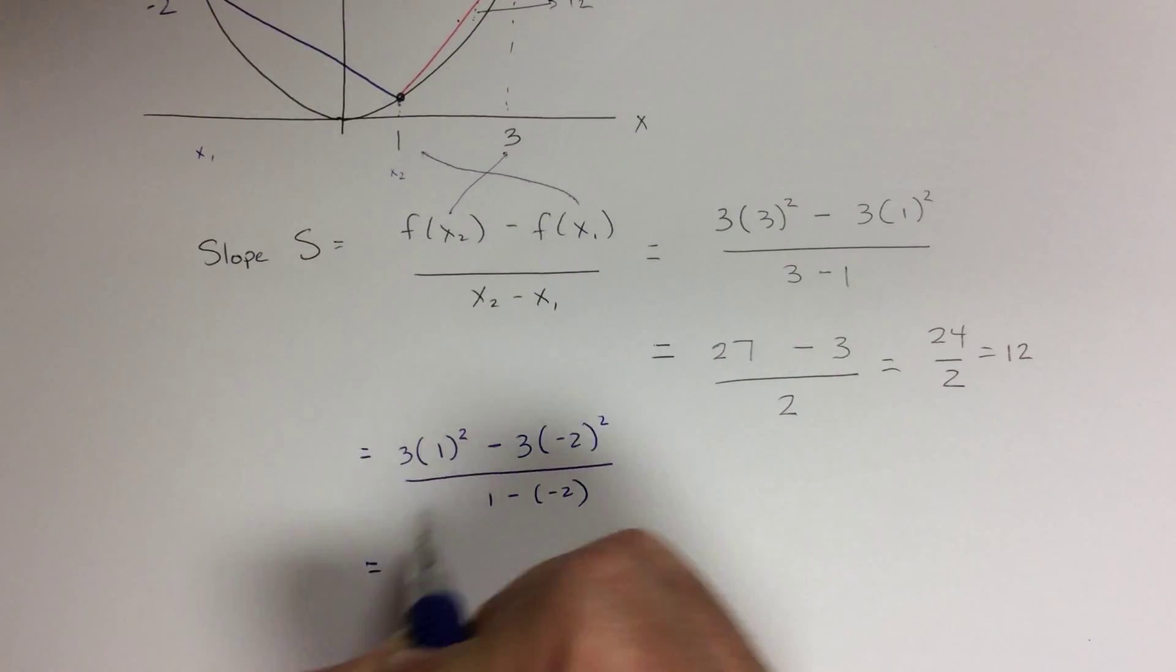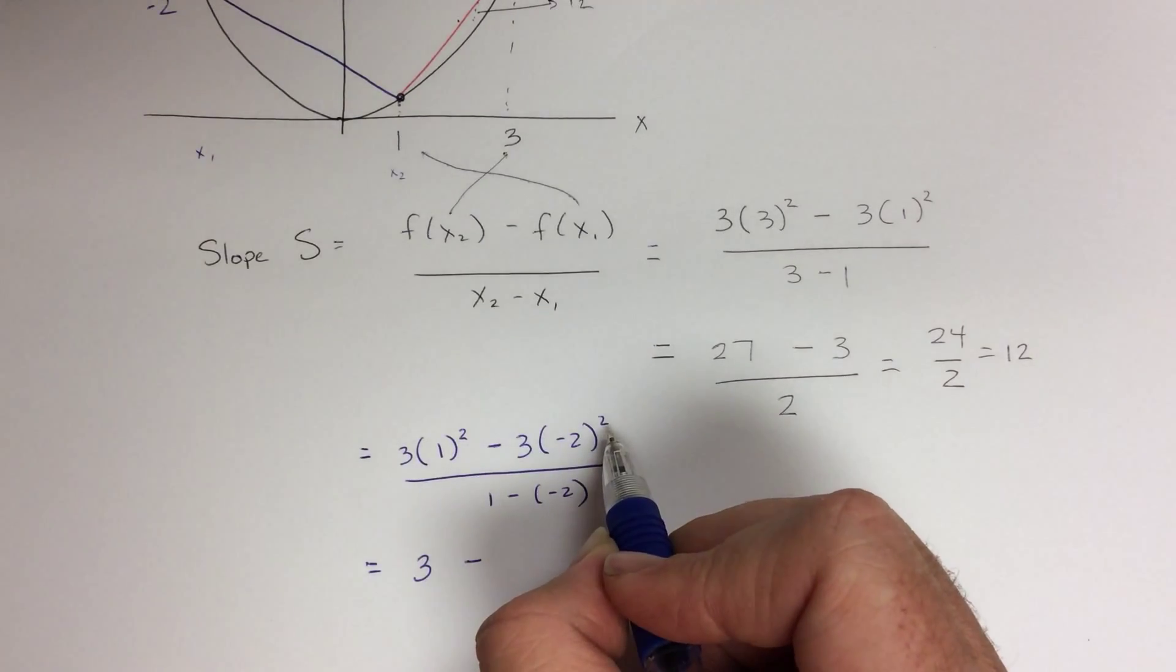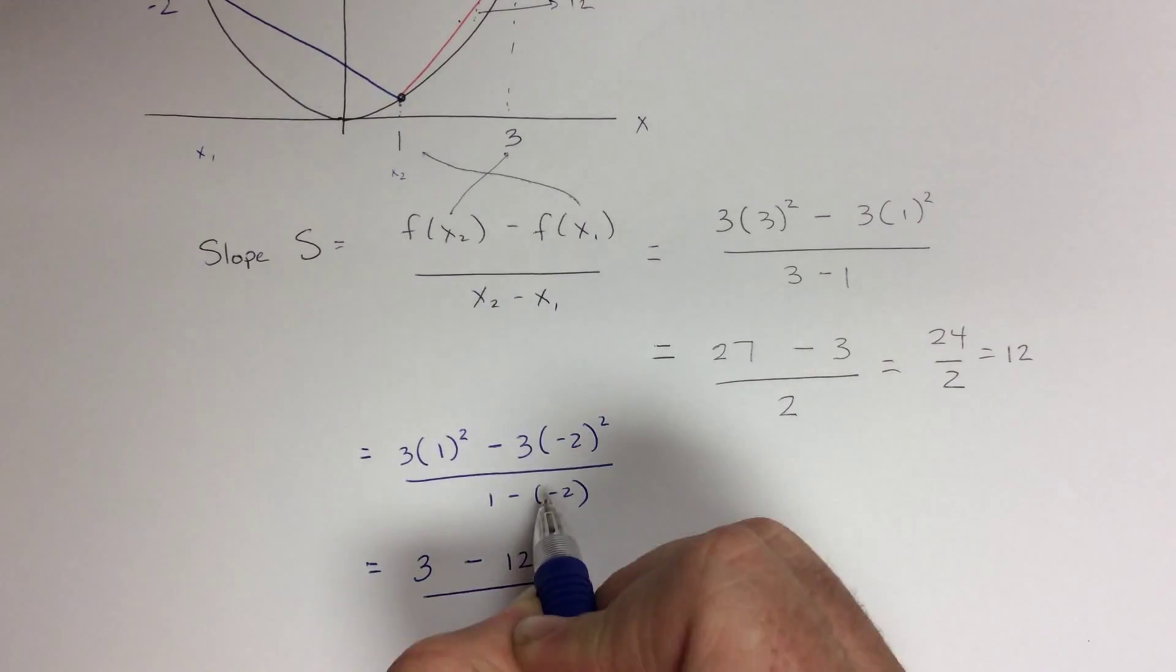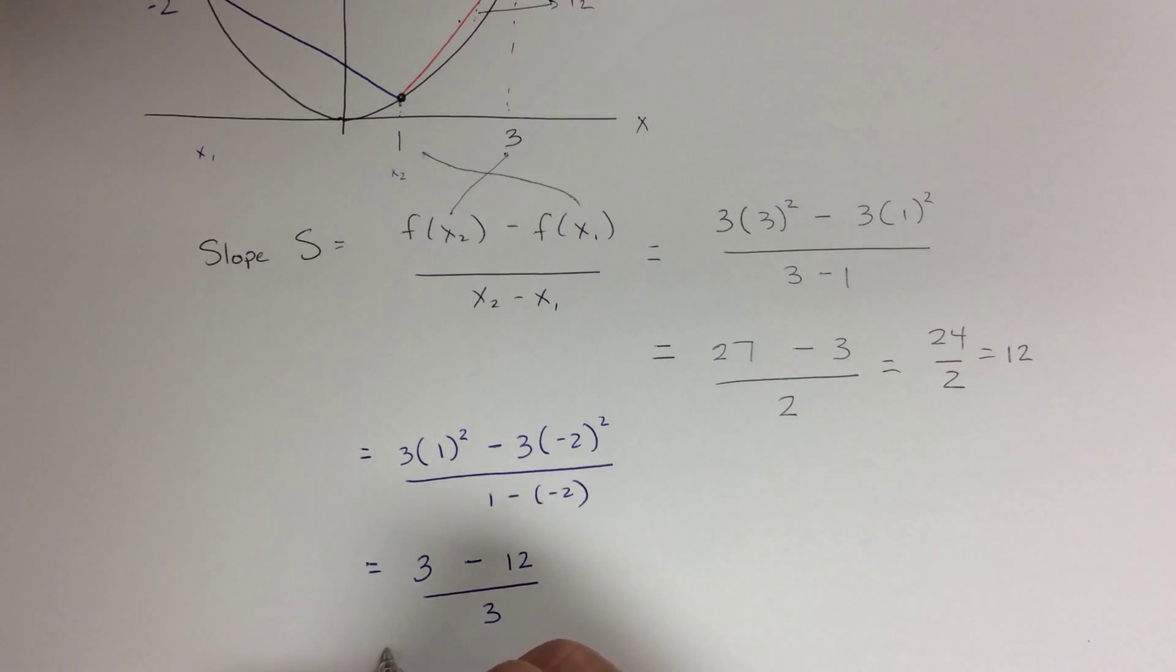So this is equal to 1 squared times 3, which is 3, minus negative 2 squared, which is 4, times 3, which is 12, all over 1 minus negative 2 is 1 plus 2, all over 3. So this is equal to negative 9 over 3, which is equal to negative 3.